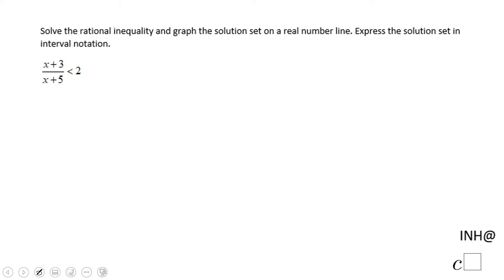Welcome or welcome back to iNeedHelpatCSquared. In this example we have a rational inequality, and you really need to be careful because this is not zero, it's two. So the first thing we're going to do is subtract two on both sides, and we're going to end up with (x + 3)/(x + 5) minus two less than zero.